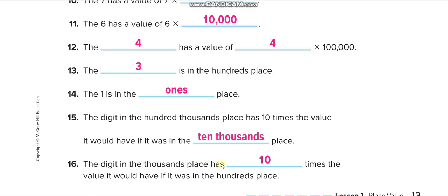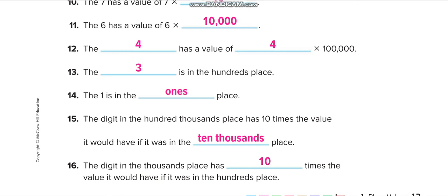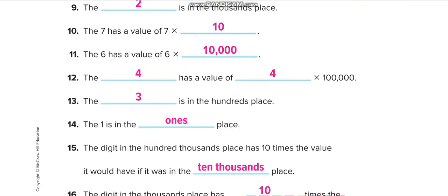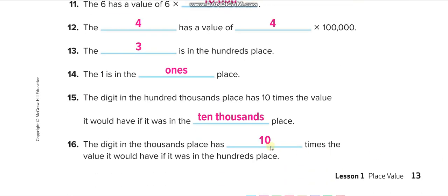Hundred thousand is ten times greater than ten thousand, so here it is ten thousand. This digit is ten times greater than that one — ten times. Got it guys? So here it is ten times. Let us move to the next page, page number 14.